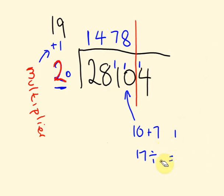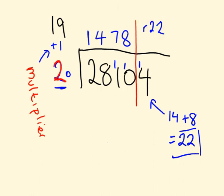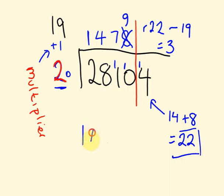We're just left to work out the remainder. We've got 14 and we add 8 times the multiplier (which is 8): 14 plus 8 equals 22. Now you'll notice this remainder of 22 is bigger than the number we're dividing by. We can get a 19 out of this: 22 minus 19 equals 3. So the remainder is 3, and that extra 1 (from removing 19) gets added onto our answer digit, making it 9. Our final answer is 1479 remainder 3.